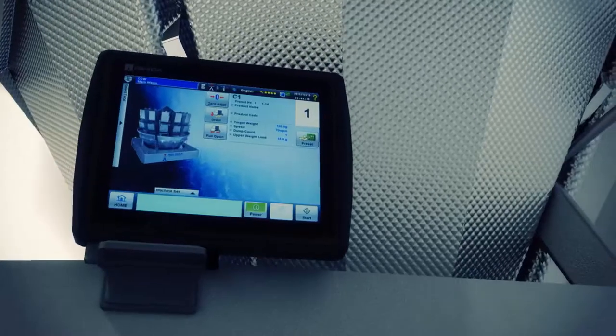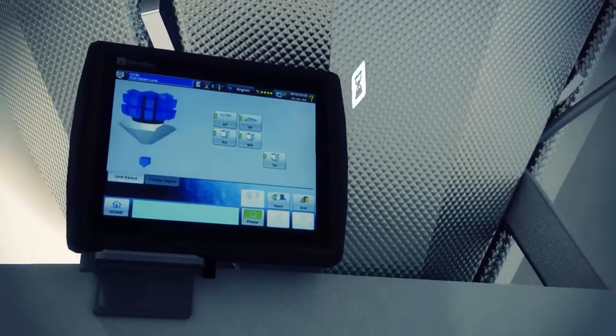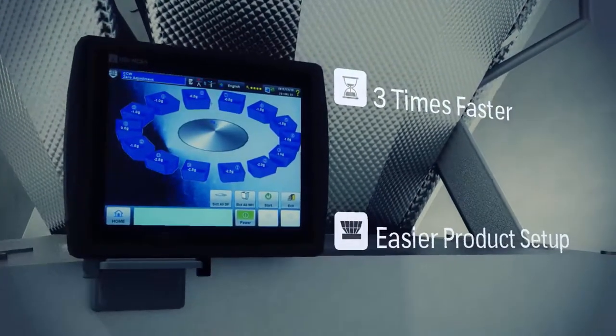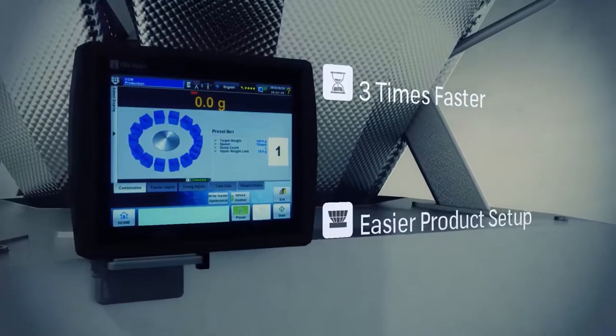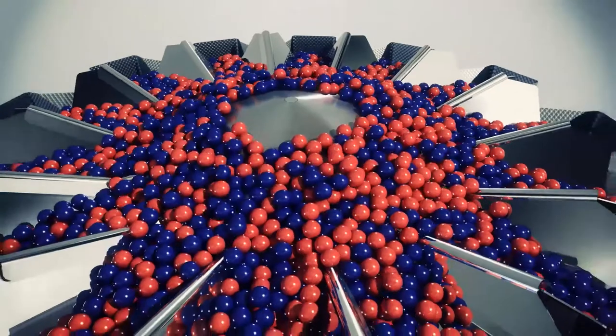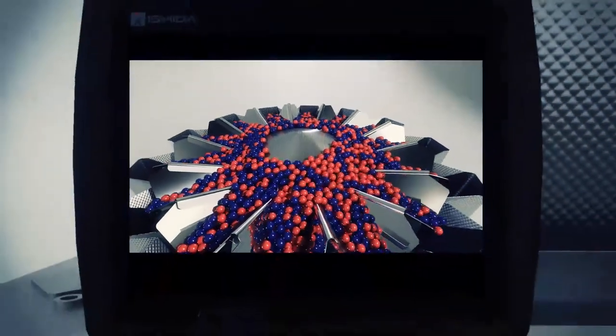The new RV software makes touchscreen operation three times faster and allows easier product setup using only five key parameters. Also, the enhanced wide-angle camera on top of the weigher allows you to optimize the product flow.